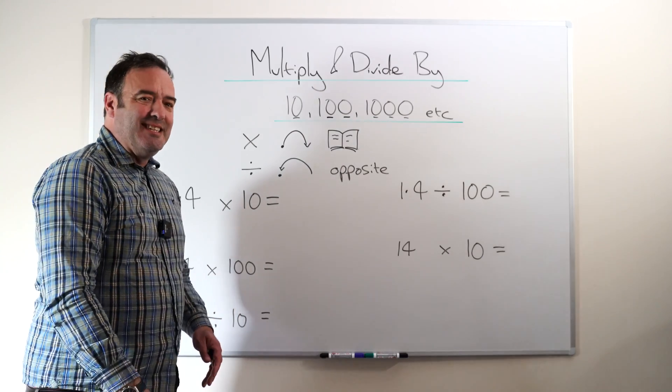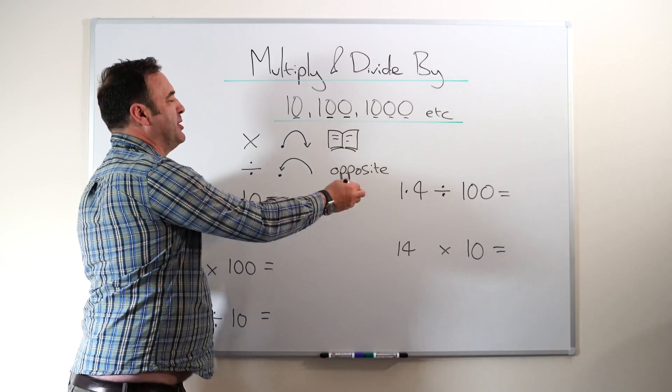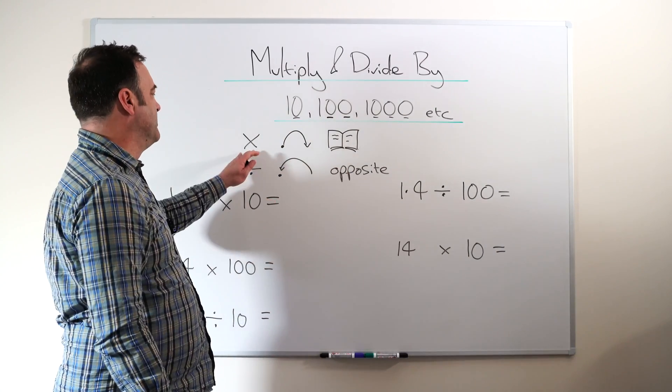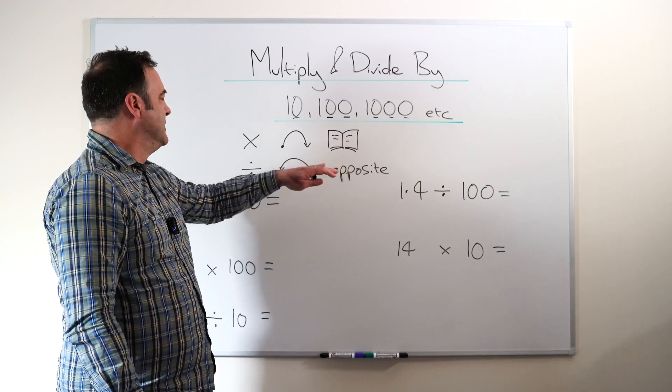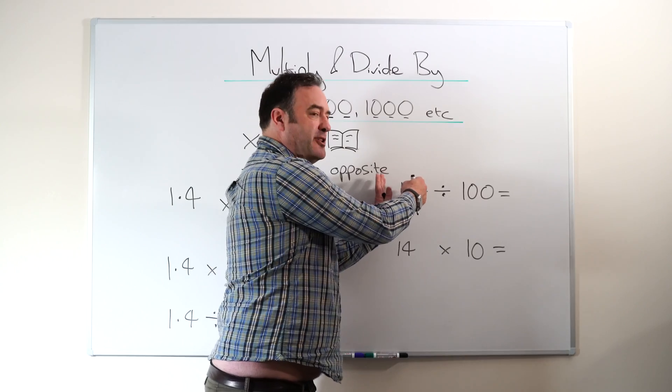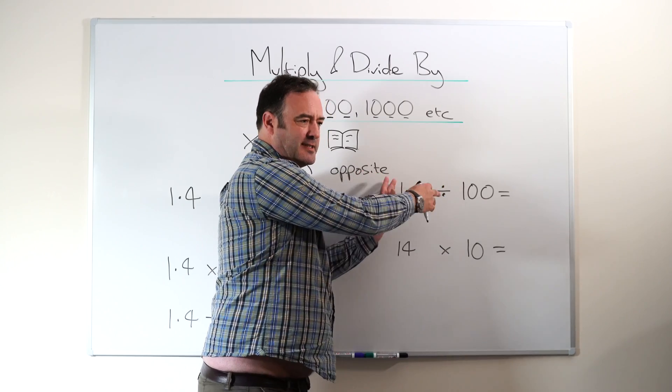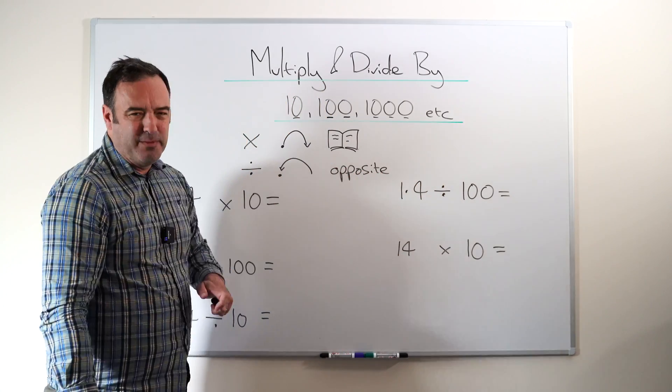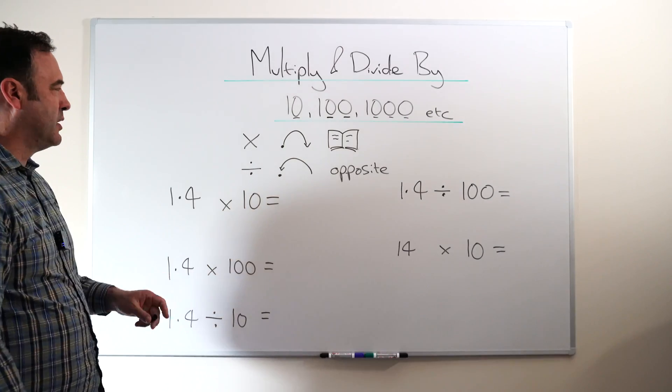For divide it's exactly the same thing but it's the opposite direction. So I always tell kids when you multiply it's the way you read and write, when you divide it's the opposite. Now of course what's actually happening is the number is moving relative to the decimal point, but this is a way of helping kids remember and it works quite well.